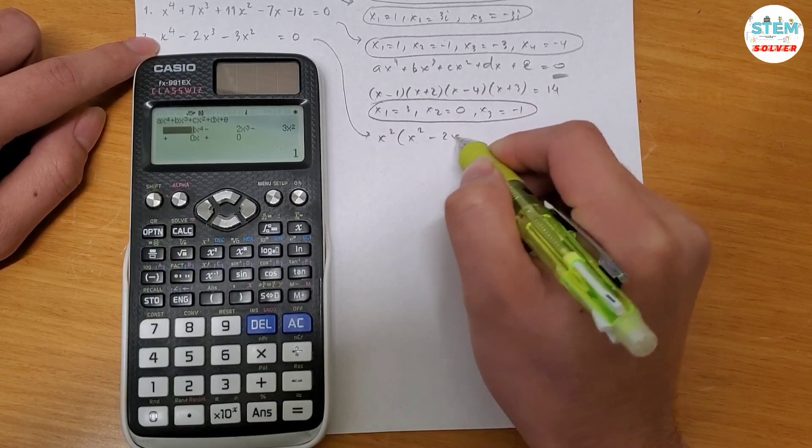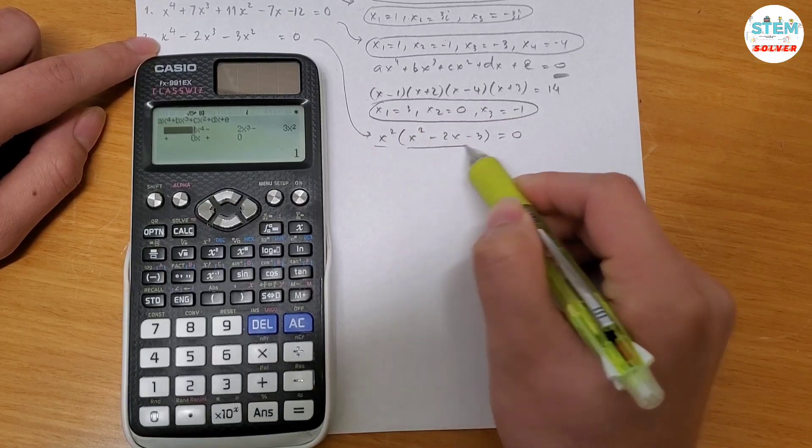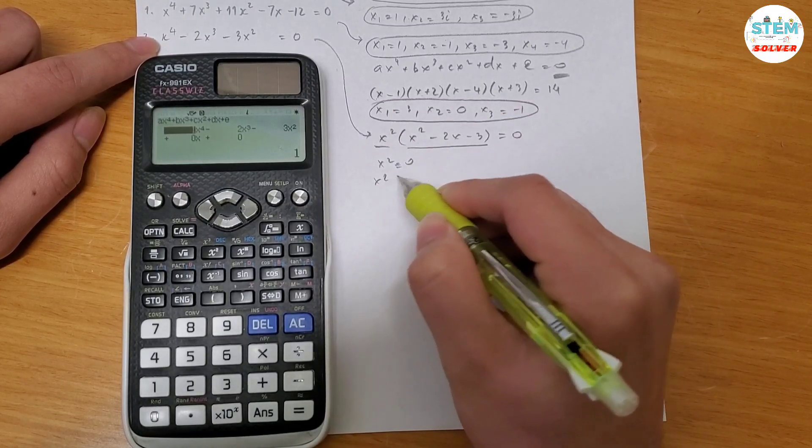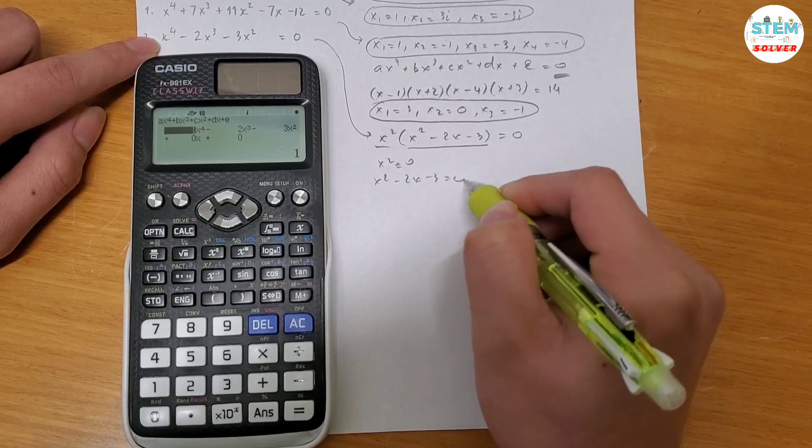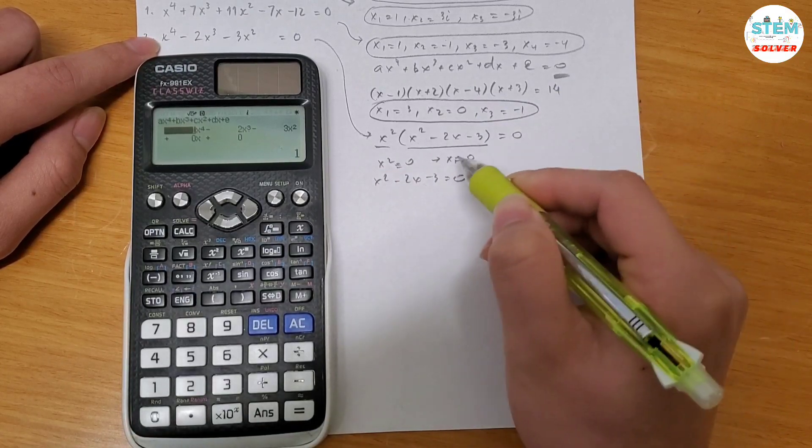And you're left with x squared, minus 2x minus 3, equals 0. And then set each of these equal to 0 to solve for the unknown. So x squared equals 0. And x squared minus 2x minus 3 equals 0. So x squared equals 0, that means that x equals 0.